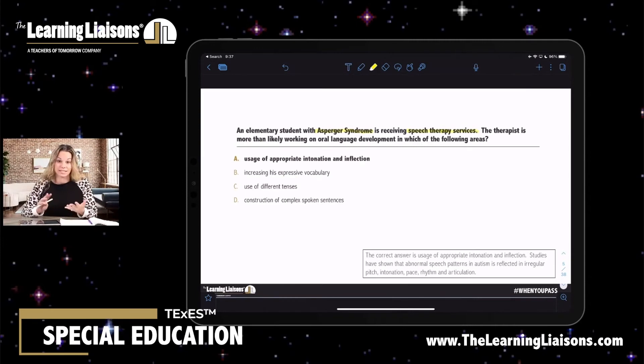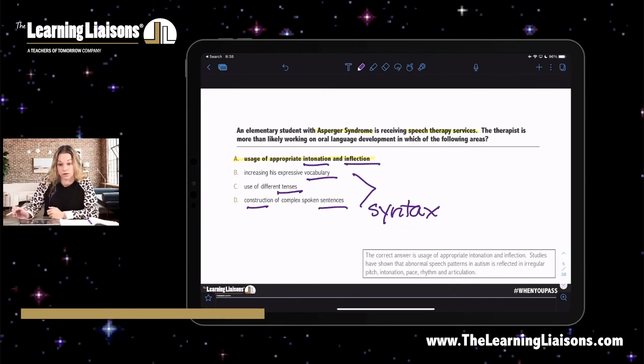And that's going to be reflected in, again, irregular pitch, intonation, pace, rhythm, and articulation. So when we're looking at our answer choices, and we're talking specifically about that oral language development, we know that our answer is going to be A, because we're looking again for that pitch, that inflection, whereas vocabulary, different tenses, construction of sentences, when we're talking about our syntax, these are going to be very different types of skills often reflected in their writing versus this is the actual speech that they're going to be producing.